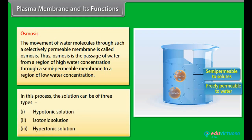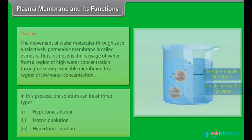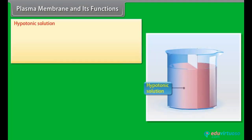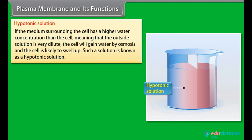Hypotonic solution: If the medium surrounding the cell has a higher water concentration than the cell, meaning that the outside solution is very dilute, the cell will gain water by osmosis and is likely to swell up. Such a solution is known as a hypotonic solution.